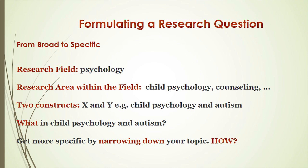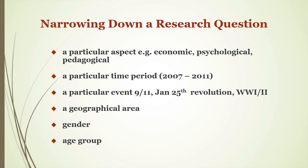Once you have two constructs — for example, child psychology and autism — you narrow it down further. You can narrow a topic by a particular aspect such as psychological, economic, or pedagogical. You can narrow it by a time period or a particular event, such as 9/11 or a revolution. You can also narrow it by geographical area, by gender, or by age group. These are the tools to move from the broad to the specific.